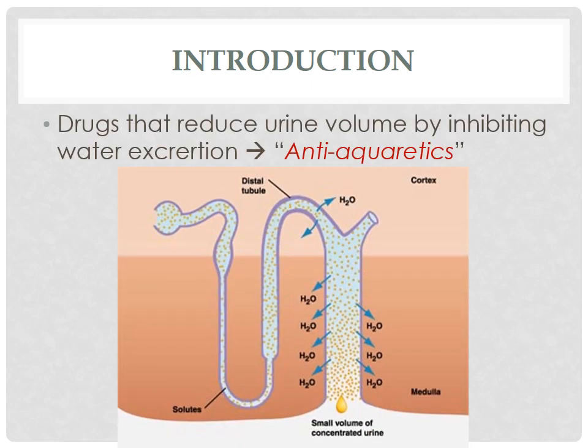Anti-diuretics are the drugs which reduce urine volume by inhibiting water excretion. More precisely, this drug should be known as anti-aquiretics, because diuretics are the drugs which increase water as well as sodium excretion, while these anti-diuretic drugs have effect only on water excretion without affecting sodium levels.